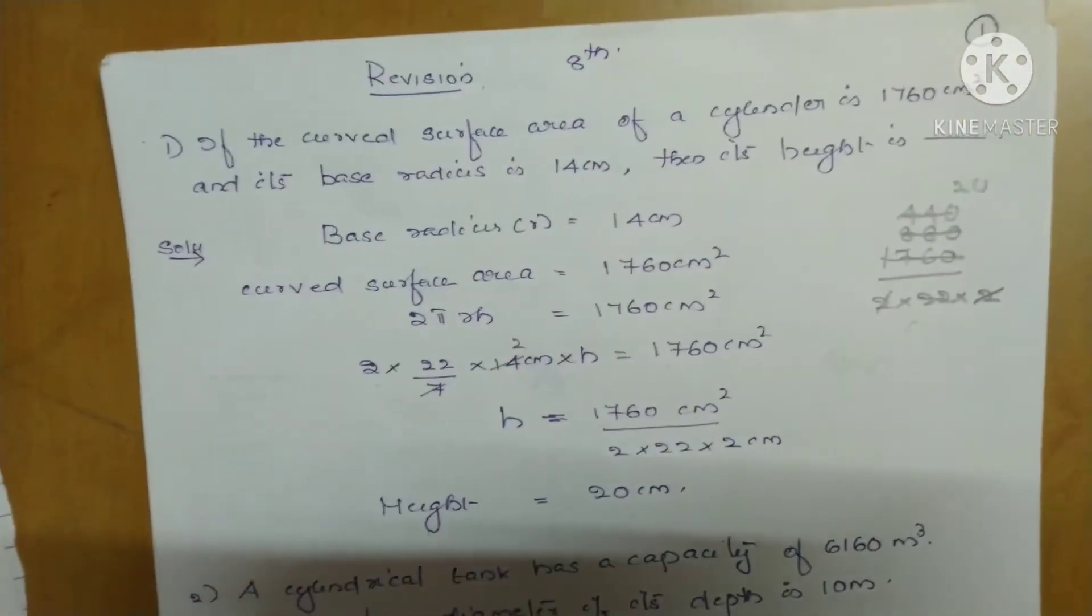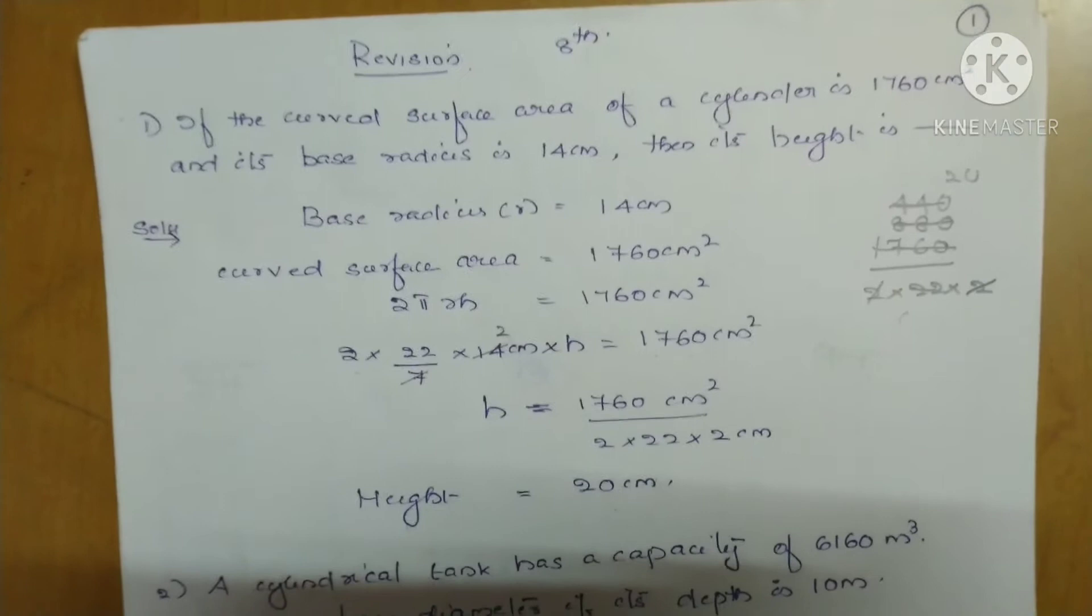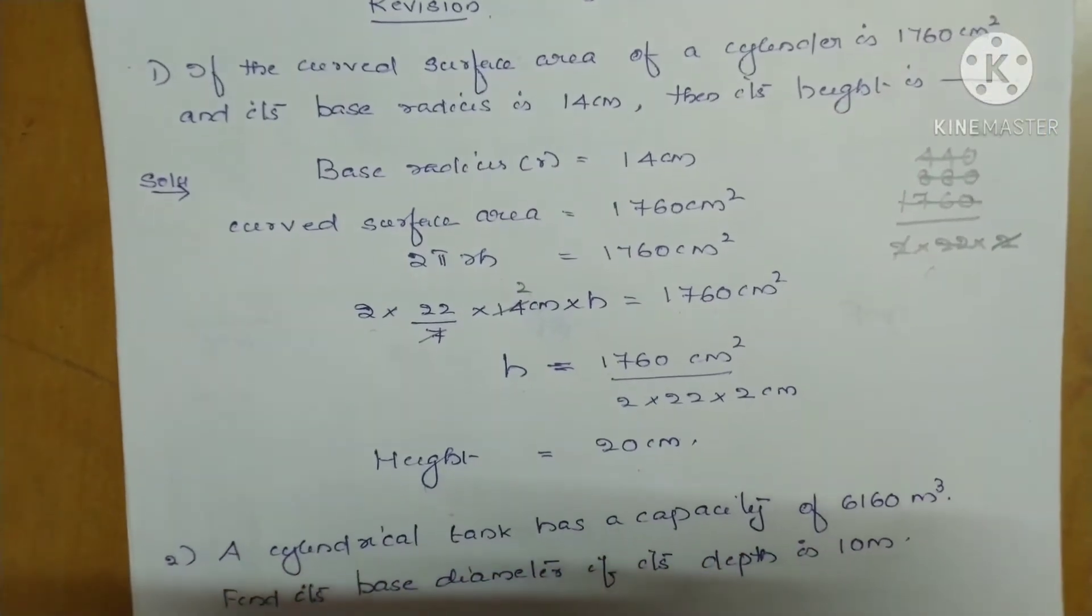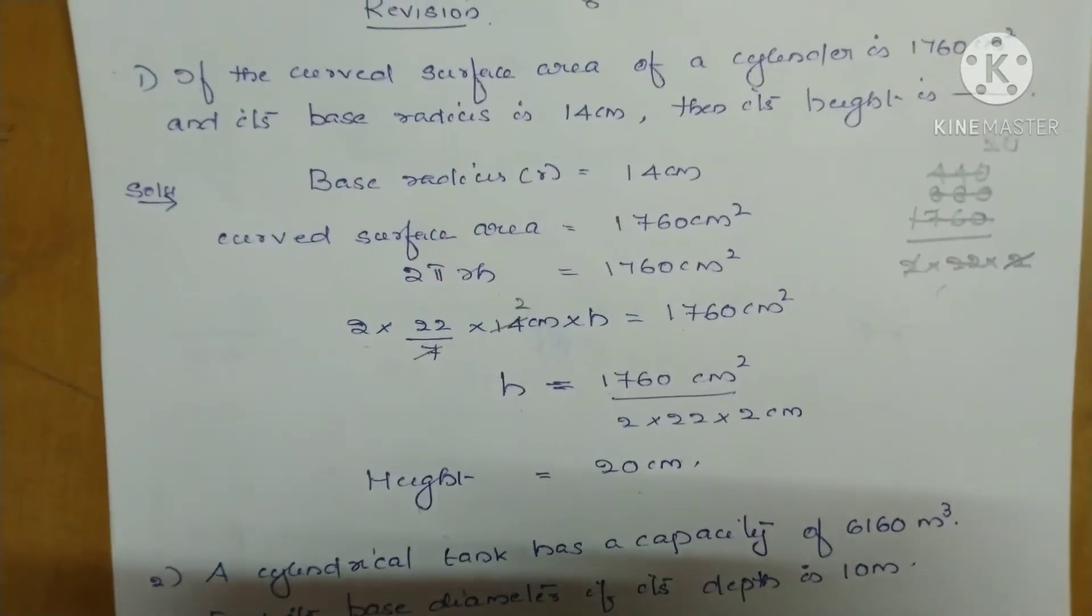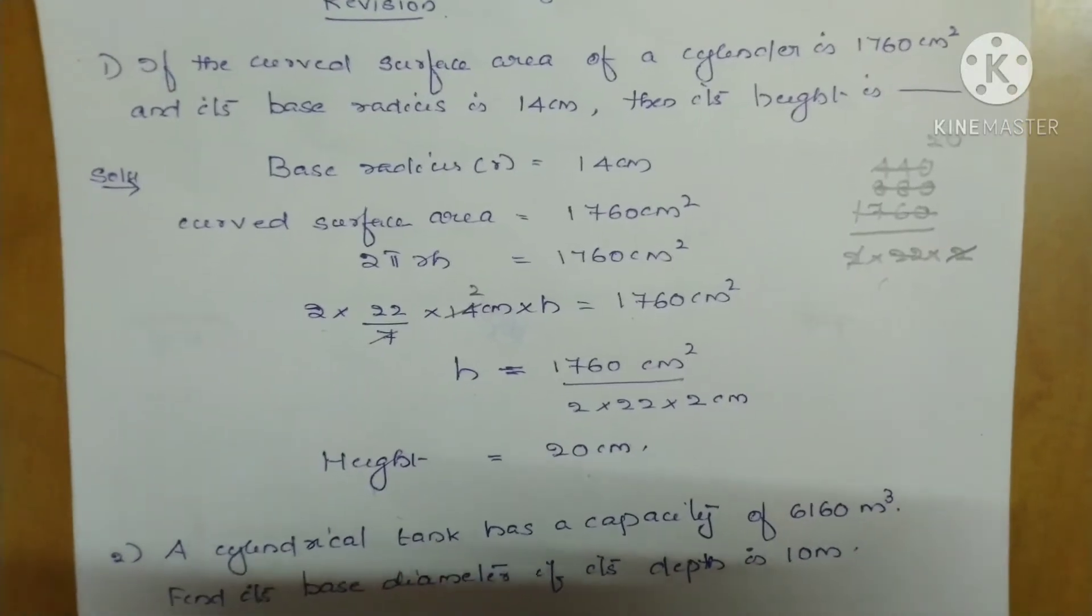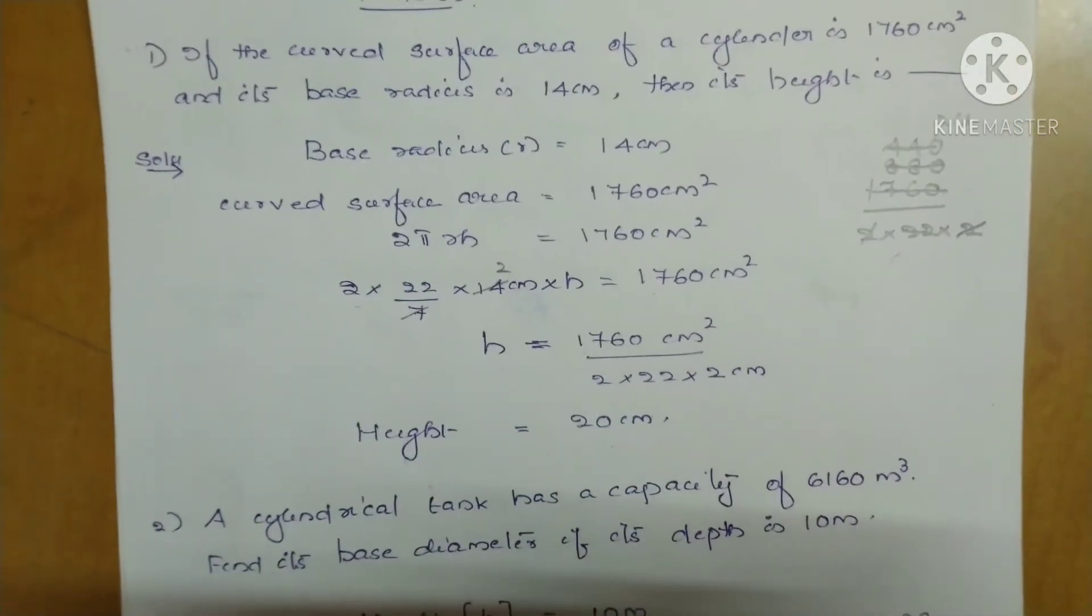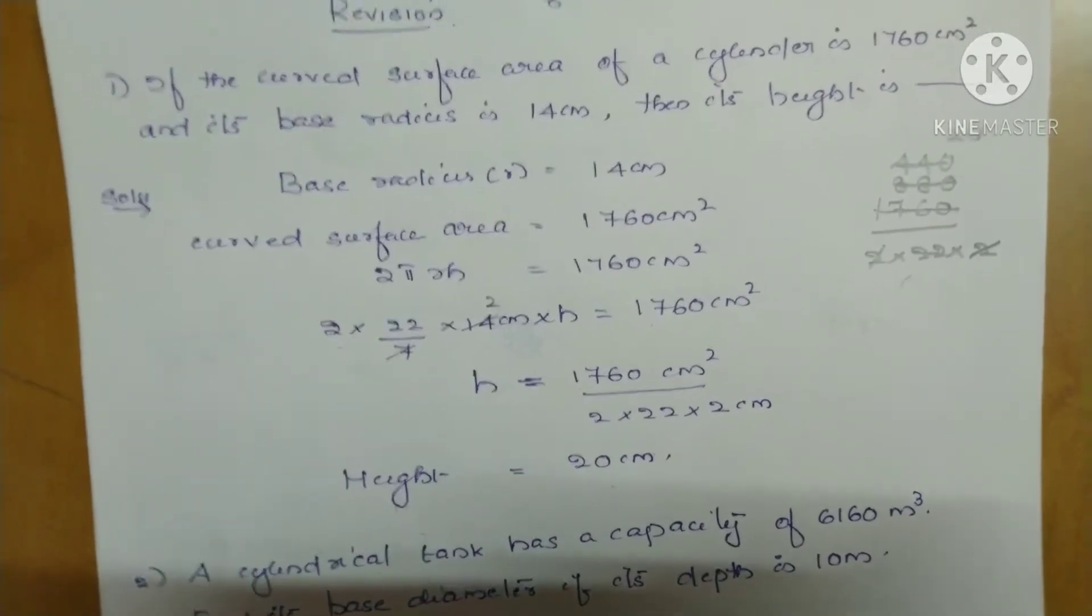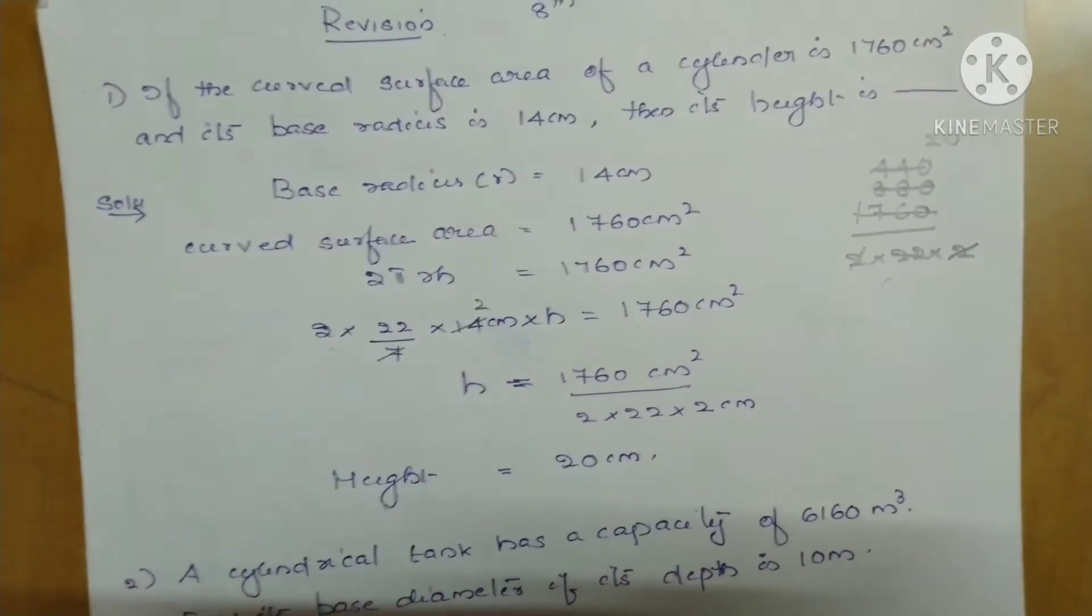If the curved surface area of a cylinder is 1760 cm² and its base radius is 14 cm, then its height is dash. Now we have to find the height of the cylinder. So two informations are given: one is curved surface area of the cylinder and other is base radius. So how can we find out? Base radius is 14 cm.